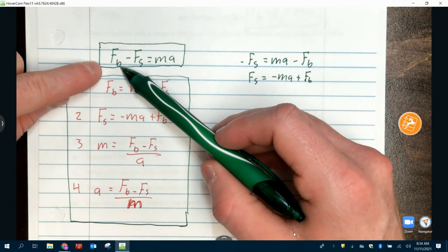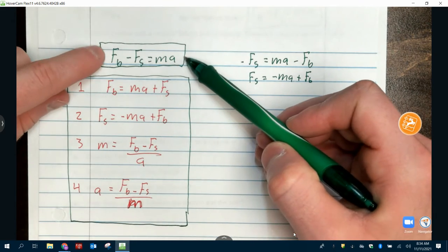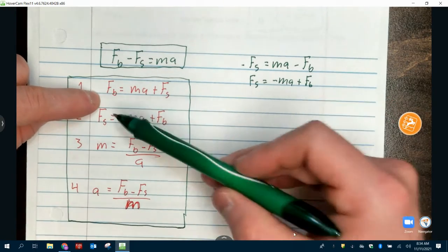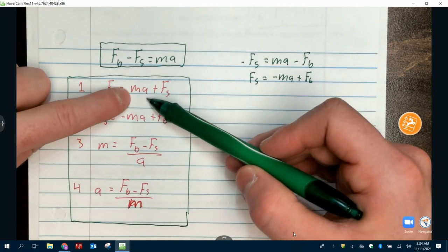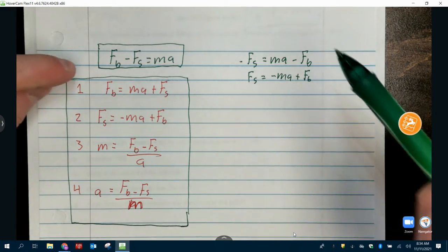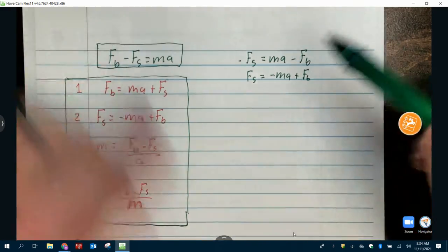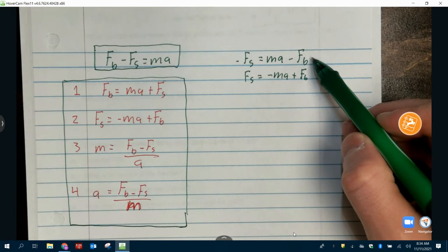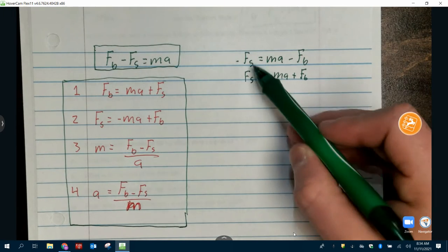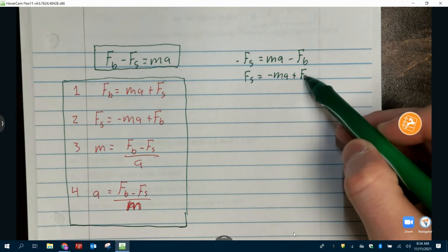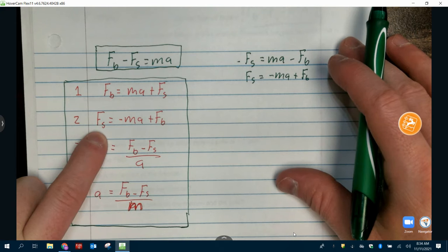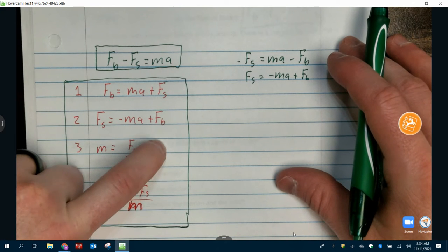I took F_B minus F_S equals ma, and I solved it for each of the other variables. If I want to get F_B by itself, I add F_S to the other side. So F_B is equal to ma plus F_S, meaning the big force must be equal to the acceleration plus the small force. If I solve for small force, what I do here is I add F_B to the other, or subtract it to the other side, and then I had to multiply by a negative to get it to look like this. This gives us small force is equal to negative ma plus F_B.